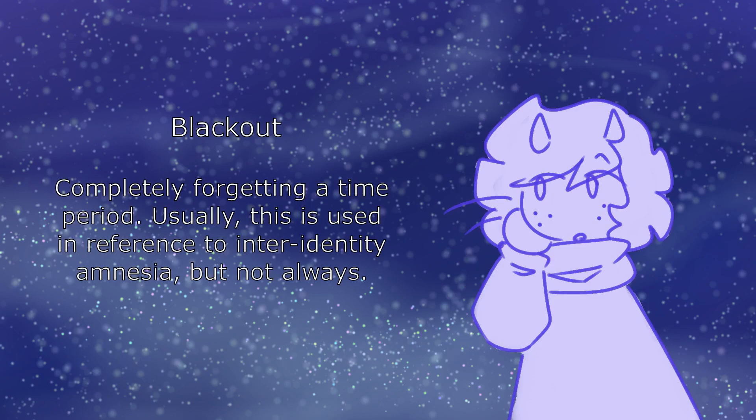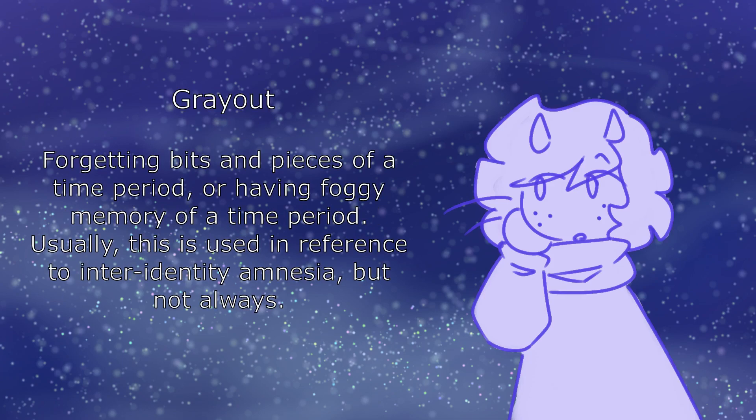The first term is blackout. A blackout is complete amnesia for a period of time. Usually this is in reference to switches, but not always. This is a very similar term to localized amnesia, but it doesn't exclusively happen during traumatic events. Greyouts, on the other hand, are having foggy memory for a period of time or only remembering bits and pieces. This term is also generally used in relation to switches, and like how blackout is similar to localized amnesia, greyouts are similar to selective amnesia.